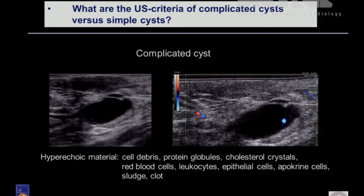Another example: you see some echogenicities inside the cyst — it can be debris, sometimes calcium. If you activate the color Doppler, you can see some color popping up and moving through the anechoic fluid. This is typical for sedimentation from inside cell debris, globules, and crystals inside the fluid.